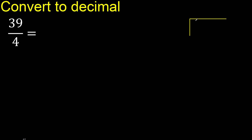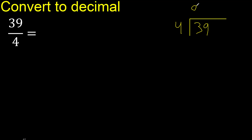39 divided by 4. 3 is less than 4, so we take 39. 39 is not less than 4, so we find which number multiplied by 4 is nearest to 39 but not greater. 4 multiplied by 9 is 36. 36 is not greater than 39.